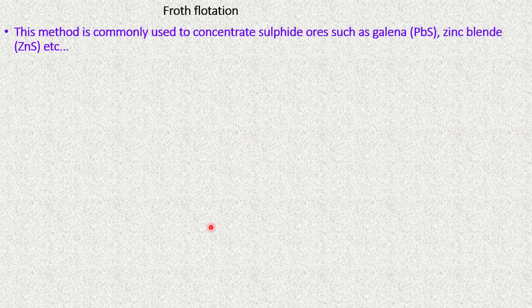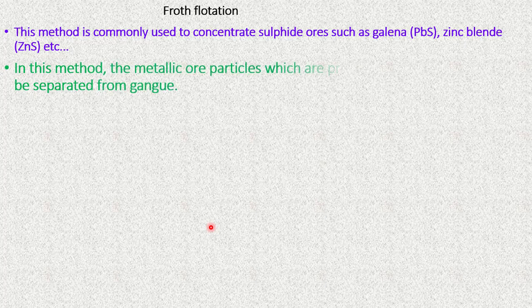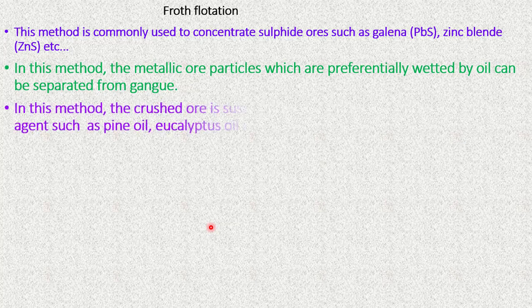This method is commonly used for concentration of sulfide ores such as galena and zinc blende. In this method, the metallic ore particles which are preferentially wetted by oil can be separated from the gangue particles.